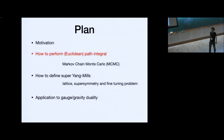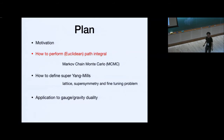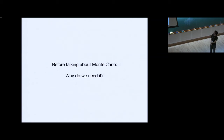I want to explain how we can actually do such simulations and get such results, and how we might attack other theories like four-dimensional super-Yang-Mills. First, I have to explain how to perform Euclidean path integrals using Markov chain Monte Carlo. From now on, Evan can fall asleep because he knows everything about it.